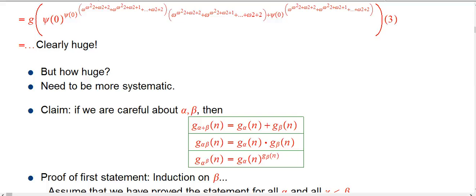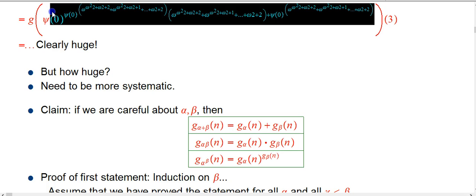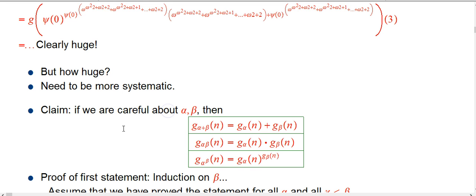Clearly we need to be more systematic than just expanding these things out and hoping for the best. We're getting to places where even the initial expansion described by G is huge. There's some really nice rules about how G interacts with ordinary ordinal arithmetic, although it's a bit tricky.